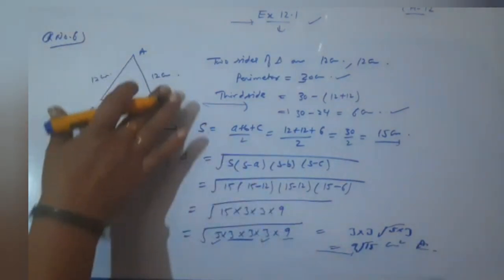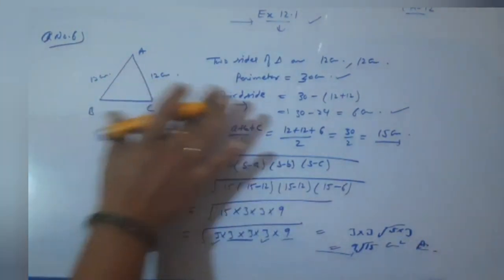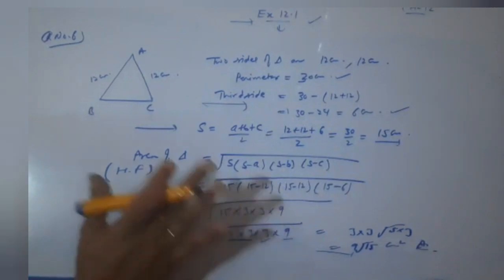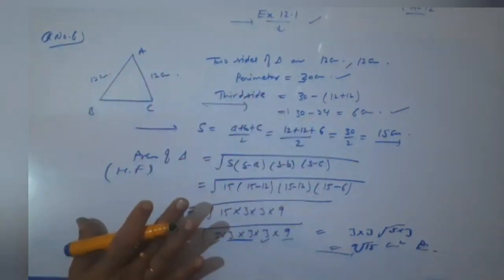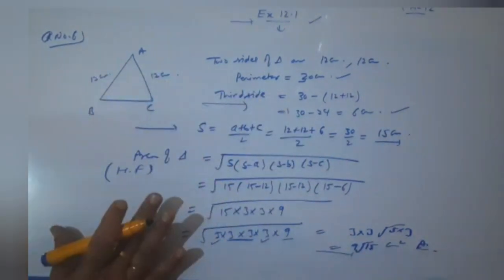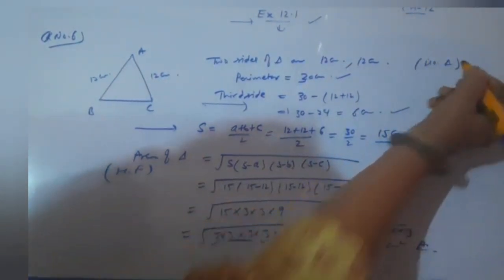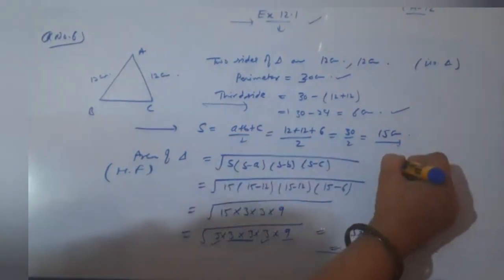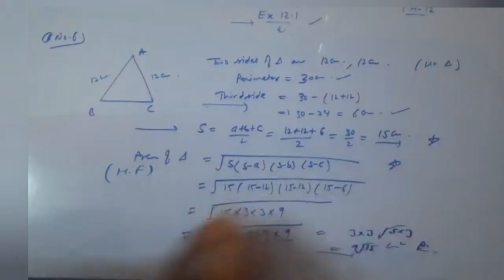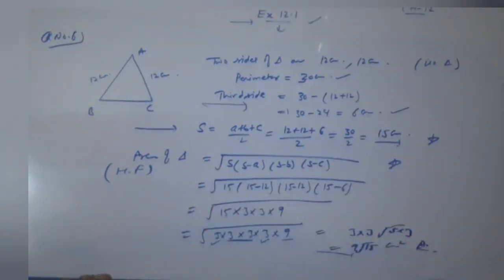An isosceles triangle is given. Perimeter is given. Third side you can find. And isosceles triangle means that both sides are equal. You must know the Heron's formula. You must know what is S. So you can easily find out these questions. And this was the last question of your exercise. And it was very easy.